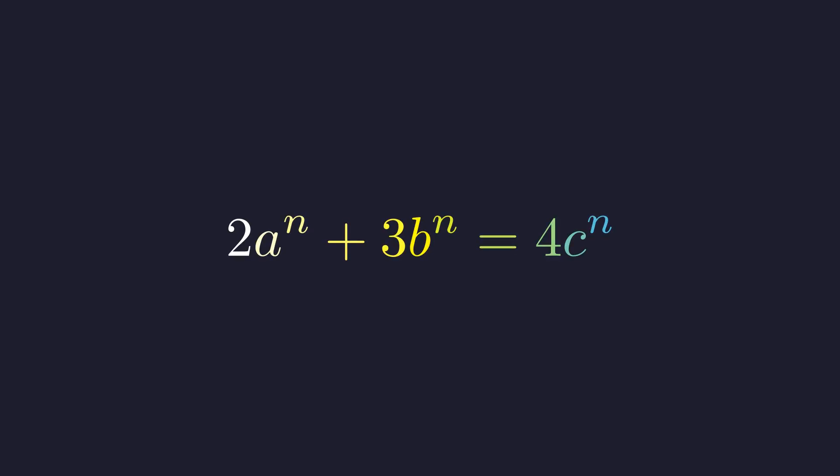This problem from the 2024 Putnam exam appears surprisingly simple: find all positive integers n for which there are positive integers a, b, and c that satisfy this equation. At first glance it seems like you could just test some numbers and find a solution, but the reality is much more complex. Behind this seemingly straightforward equation is actually a complex detective story, a pursuit involving parity arguments, modular arithmetic, and even infinite descent.